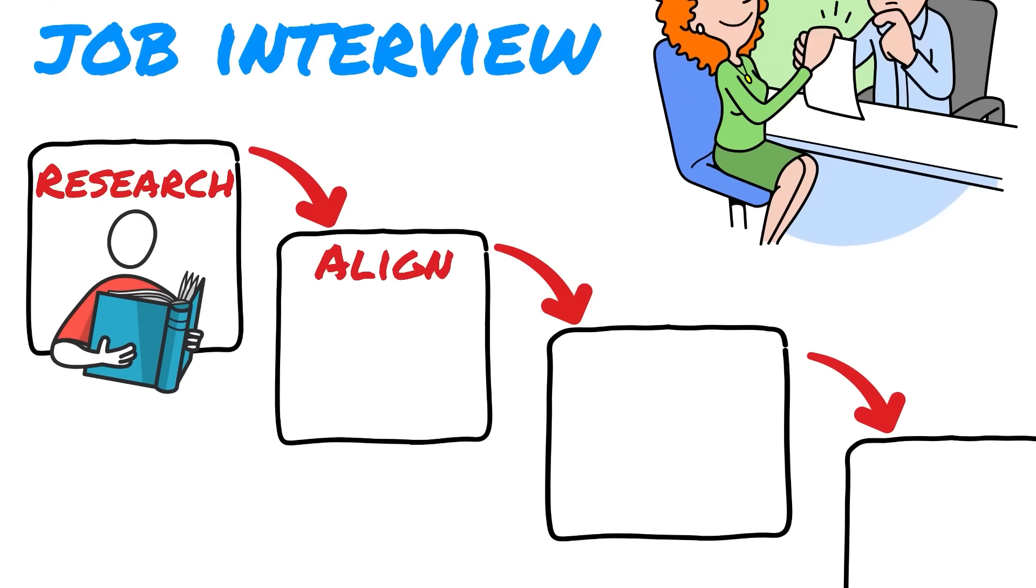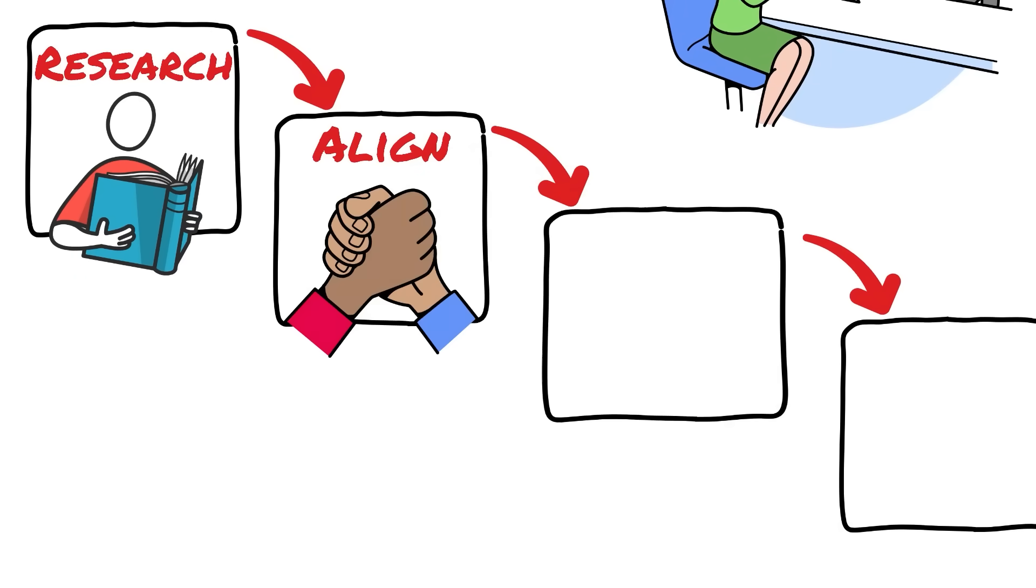Next, think about alignment. What do I mean by that? Join the dots between the terms of reference of the job—what you're expected to do—and your experience. And do the same thing with the competencies required by the job. Remember that in the interview, they're going to be asking you for examples of what you've done to demonstrate your ability to function in this role.